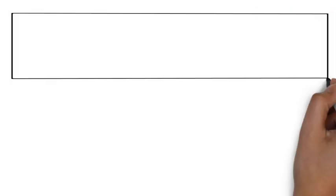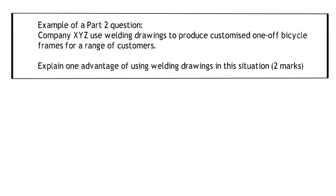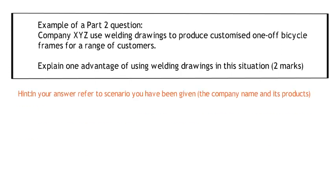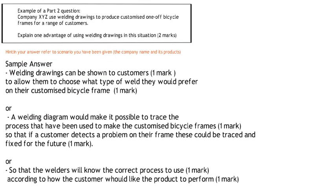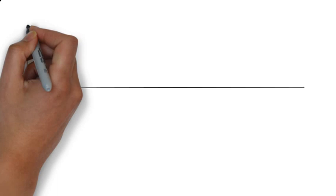For example, you have this company — a company wants you to use welding drawings, and they produce customized bank frames. How will you answer this? It's one advantage of using this. Now these are some sample answers that you could use. As you can see, they're linked answers. You have the first part one mark and the second part one mark, and you have to apply the answer to the question. So what is the benefit for the company?